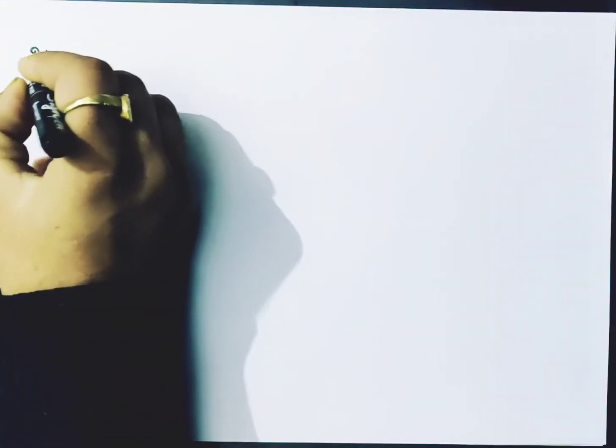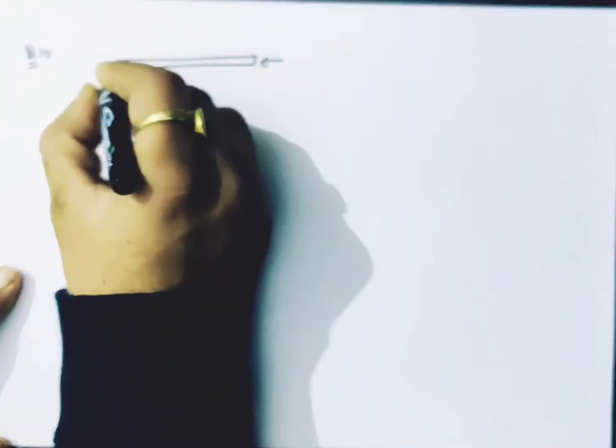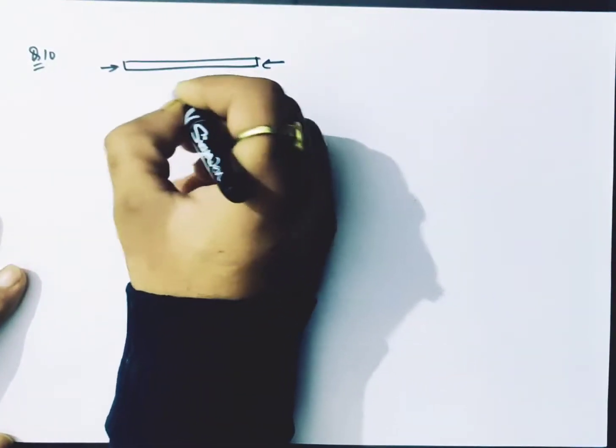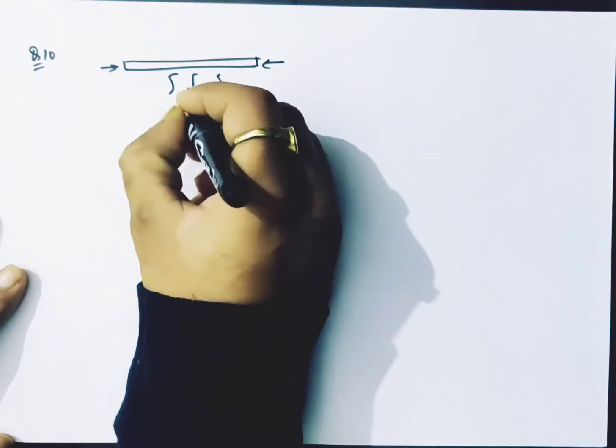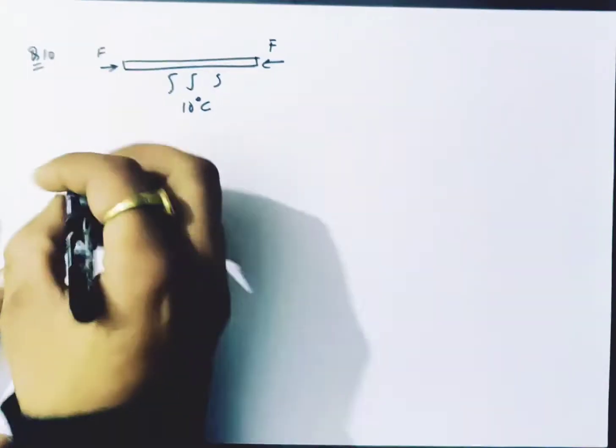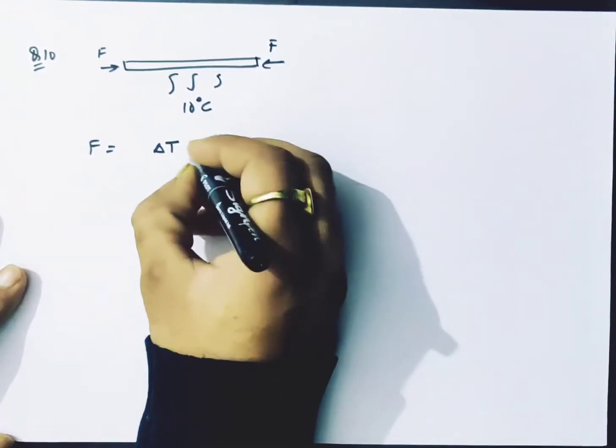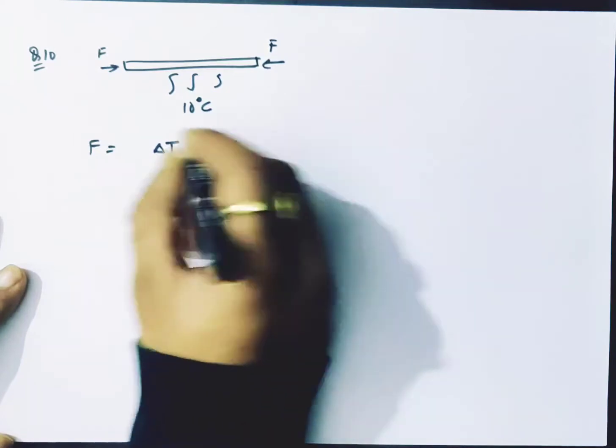Now they have asked that a steel rod is compressed by compressive force because the temperature is raised by 10 degrees C. So what is the compressive force? In the previous question, there was a formula for this question. F = T·A·Y·α. Now I will not go through the whole process.